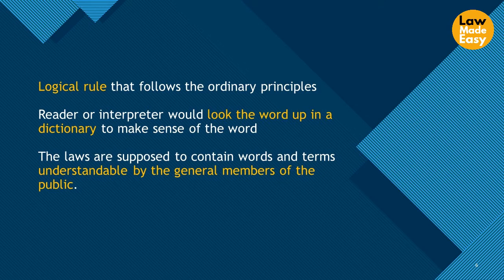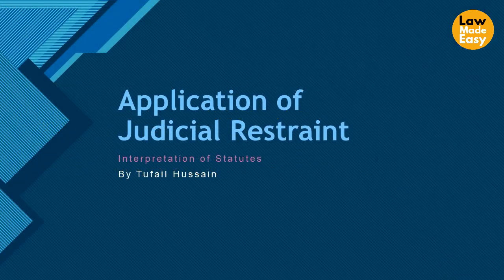If some text is not clear, any reader or interpreter would look the word up in a dictionary to make sense of it. The laws are made for the public and are supposed to contain words and terms understandable by the general members of the public. But there is another reason for this rule to be applied, and that comes under the heading of application of judicial restraint.